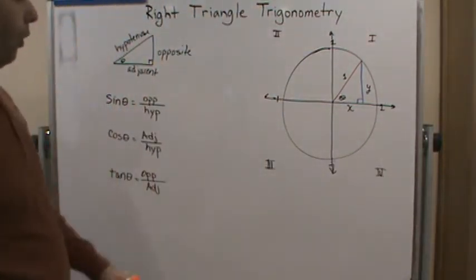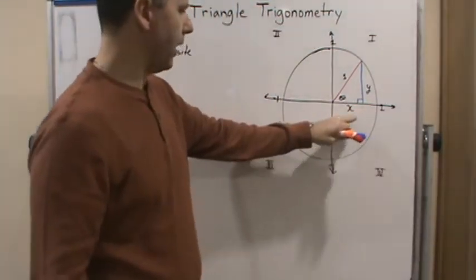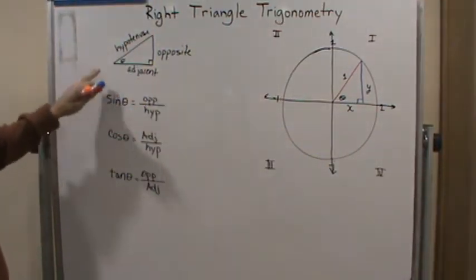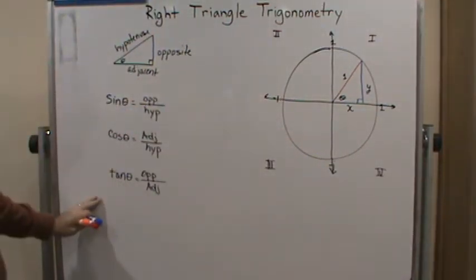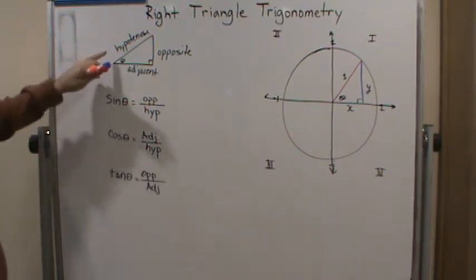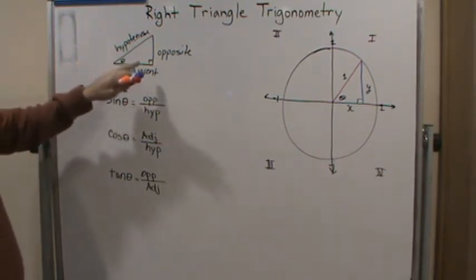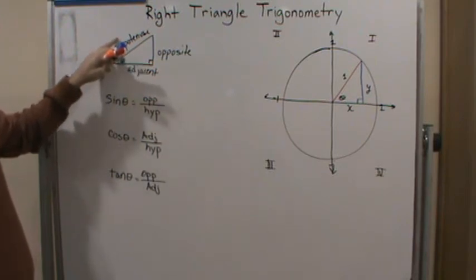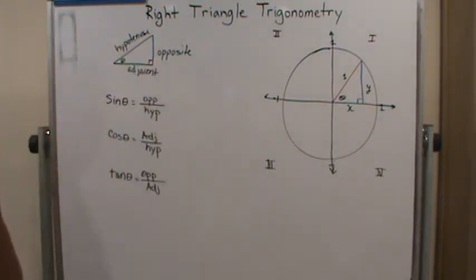And so what we're going to do is we're going to use the right triangle to help us set up these definitions for the trigonometric functions. So, the hypotenuse is the side that's across from the right angle, the 90-degree angle.